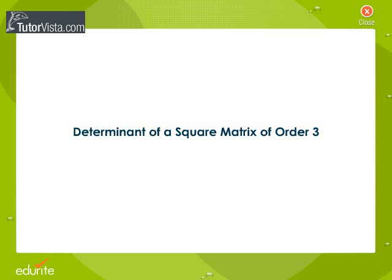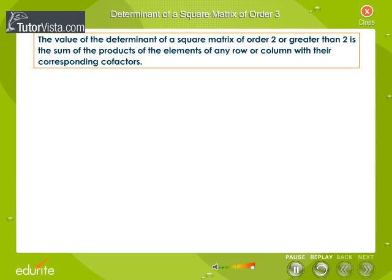Determinant of a Square Matrix of Order 3. The value of the determinant of a square matrix of order 2 or greater than 2 is the sum of the products of the elements of any row or column with their corresponding cofactors.